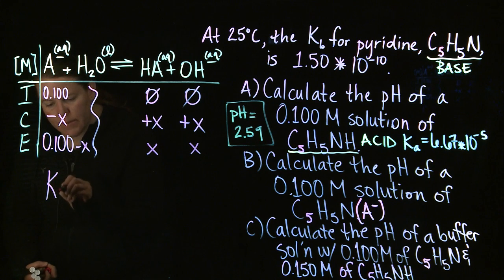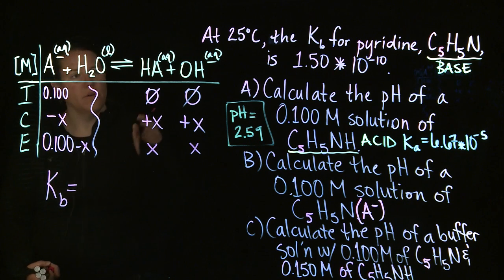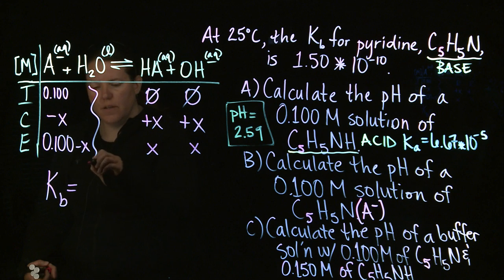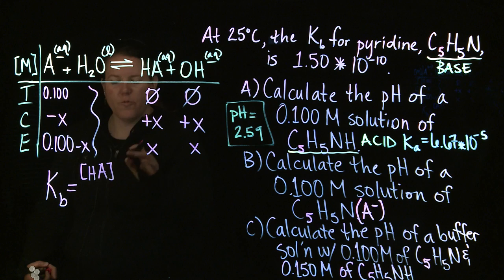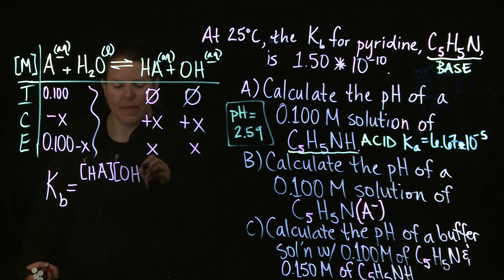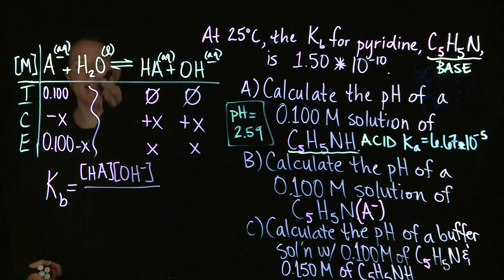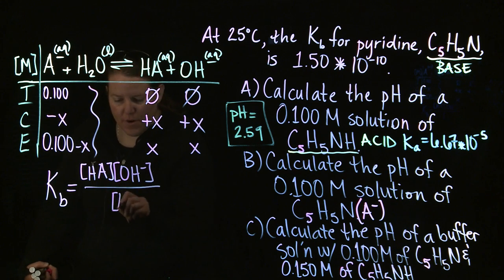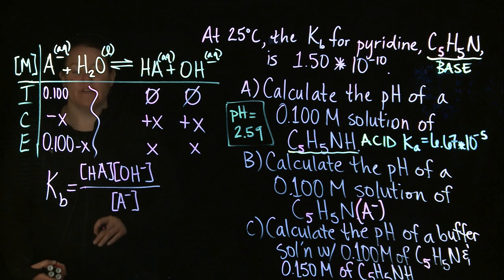The K expression, and this is for the Kb now, because we're talking about a base, we have HA. The coefficients to the power, I'm sorry. Wait a second. I'm saying it fast. Too fast, perhaps. This is the products of this equilibrium to the power of their coefficients over the reactants to the power of their coefficients.